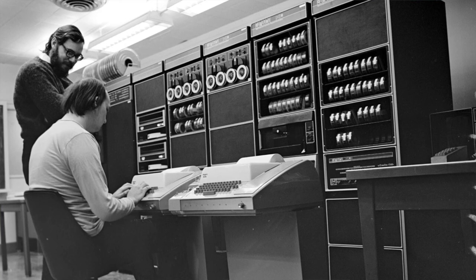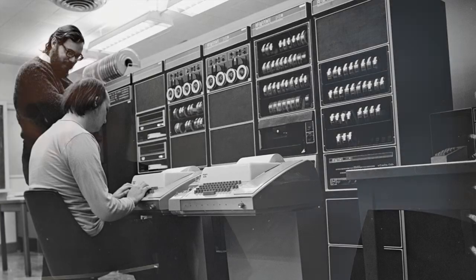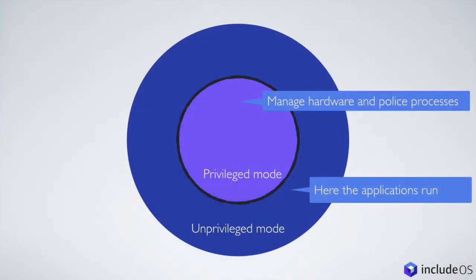So you have this computer, you log into it, you get your own terminal, you get your own processes, and the operating system separates my data from your data. This has implications on how the operating system was designed. You see the operating system kernel is the one in the middle. It runs in privileged mode where it is allowed to talk to hardware and police the processes and the users.